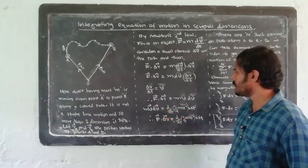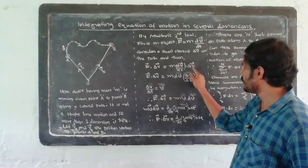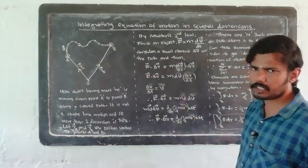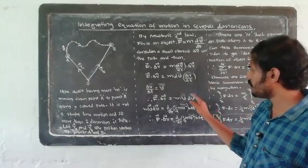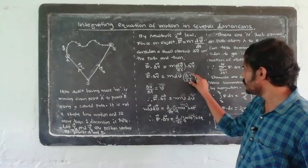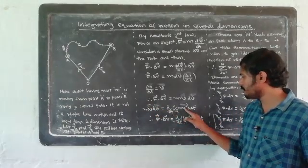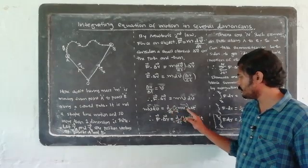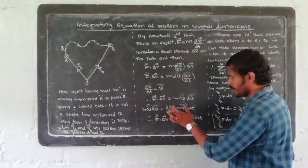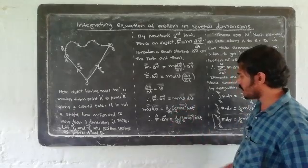If δR/δt = v — since the direction of δR is along the velocity direction, δR/δt is indeed the velocity vector v. Therefore F·δR = m·dV·v. And m·v·dV equals d(½mv²), so F·δR = d(½mv²).